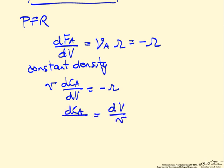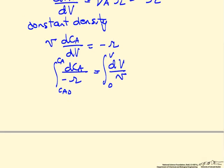Rearranging, dCA over minus R, and we can integrate from the inlet to some point down the reactor, so that would be the cumulative volume, and the inlet concentration CA0, and then CA corresponding to whatever volume we're at.